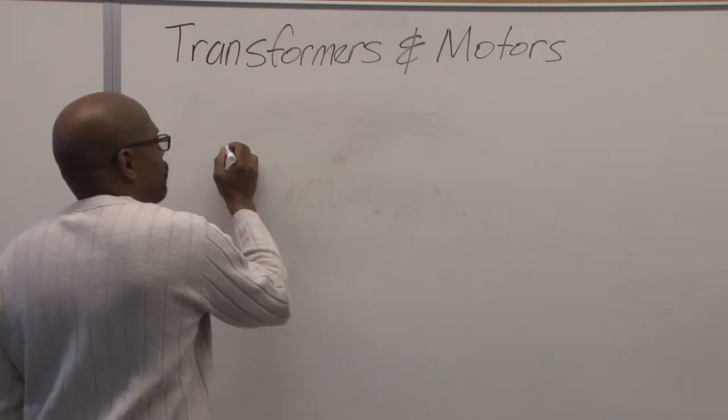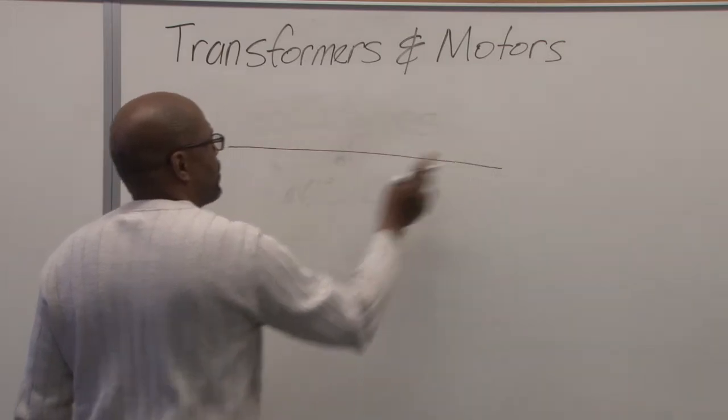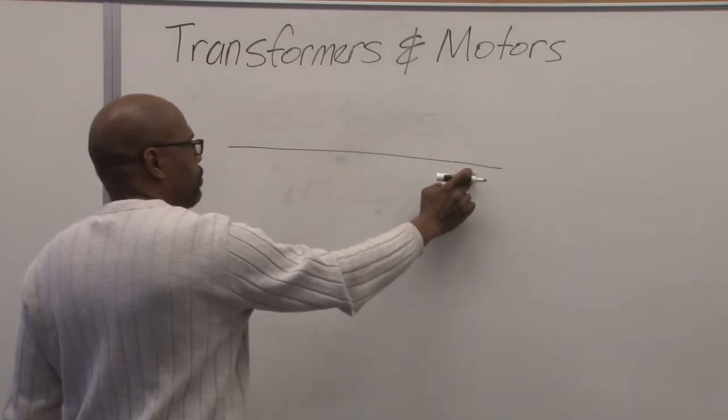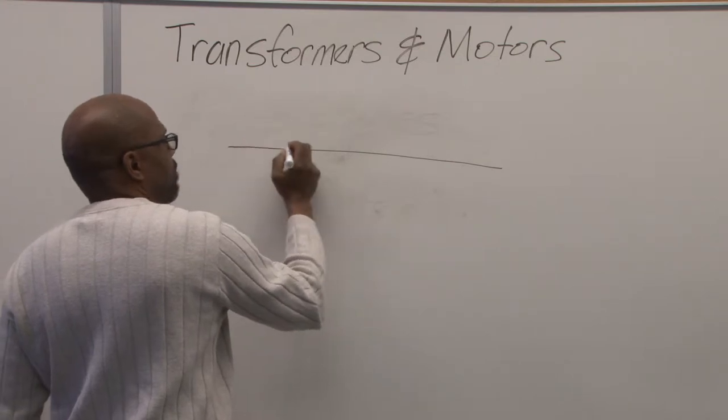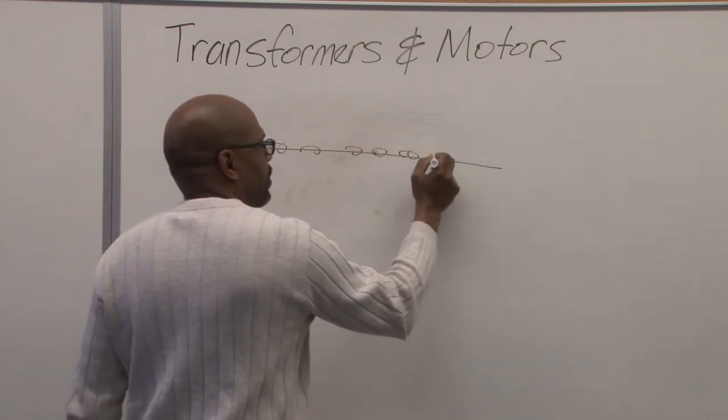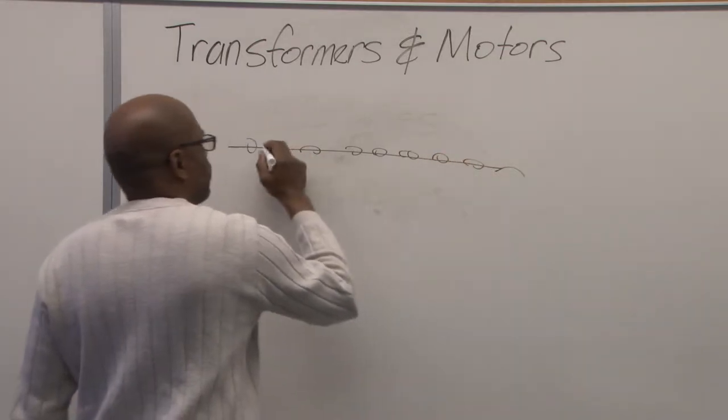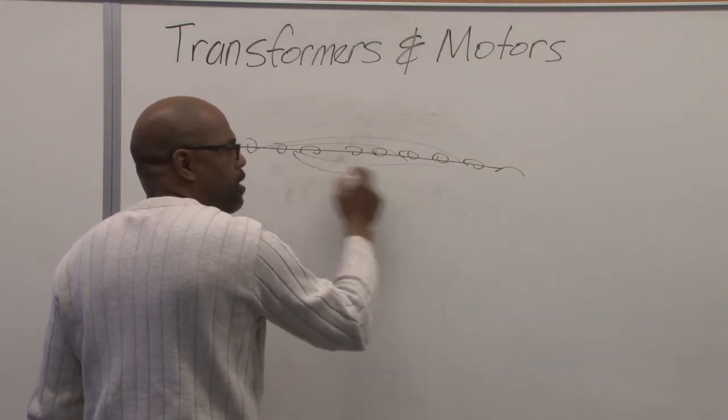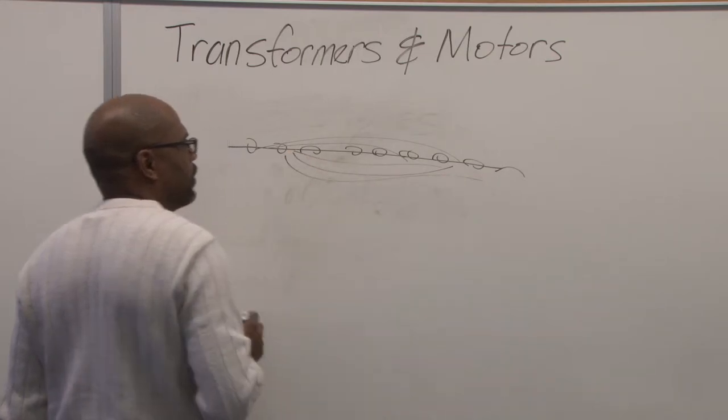We know that when there's current flowing through a wire, it produces a magnetic field around the wire as electrons flow. So we have a magnetic field, a very weak magnetic field, but it's still a magnetic field.